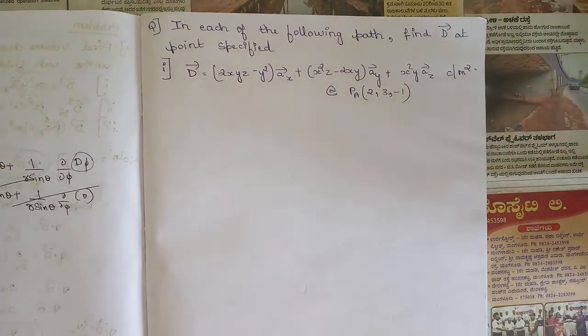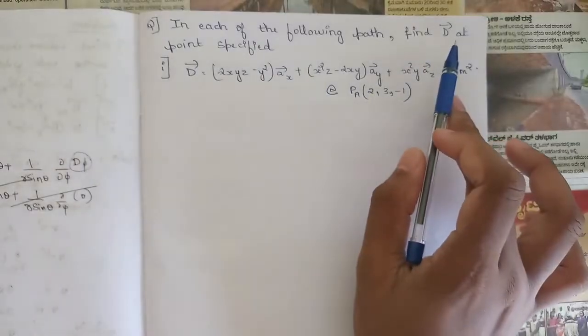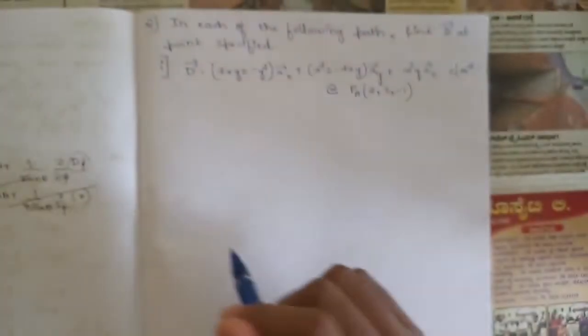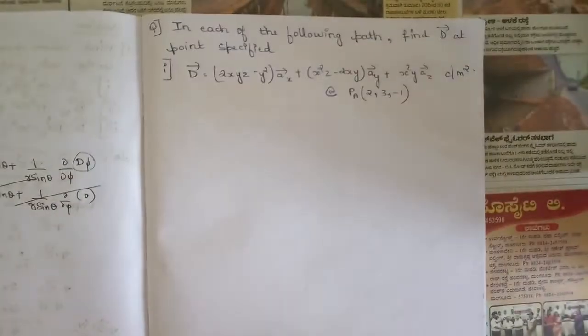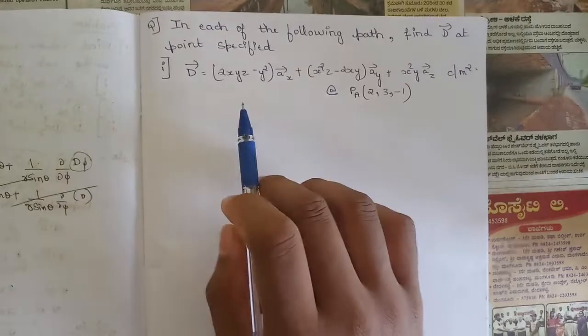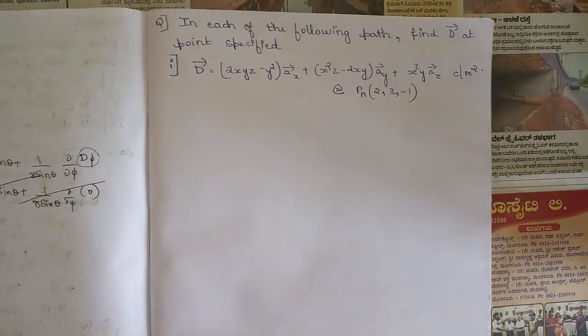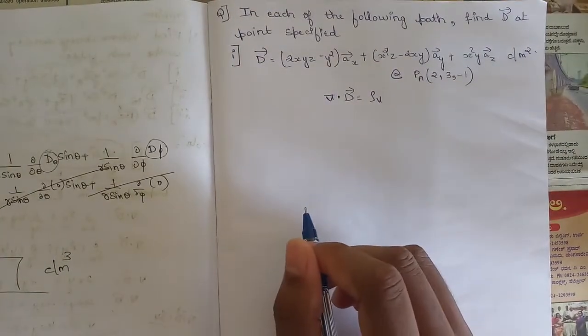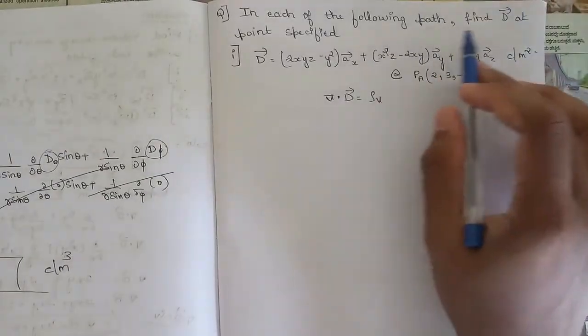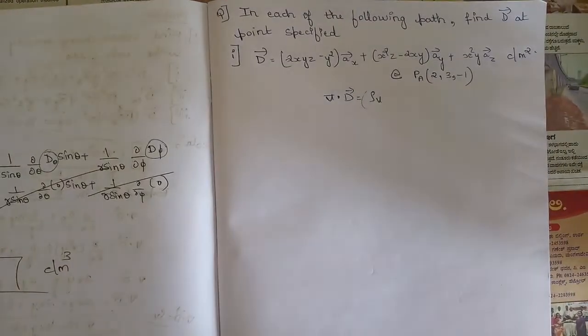So now, related to divergence theorem, we are going to solve a few problems. The first question is: in each of the following parts, find the electric flux density D at the point specified. Here in this problem they have given the electric flux density D, and using this we need to find the value of the divergence. For the divergence, we need to find the value of rho_v using del dot D equals rho_v.